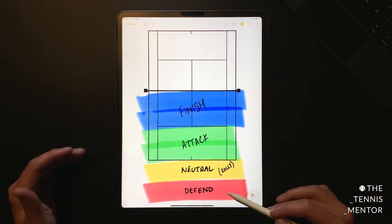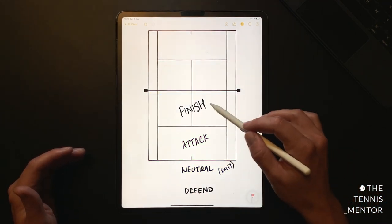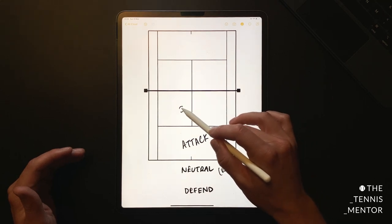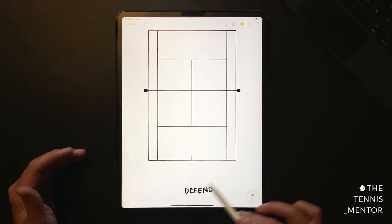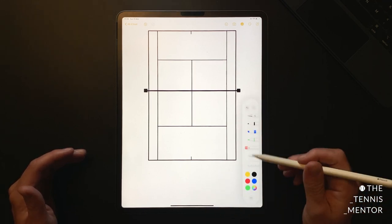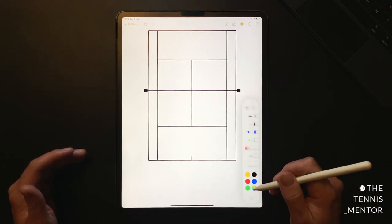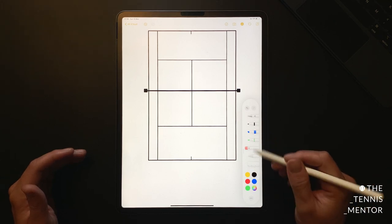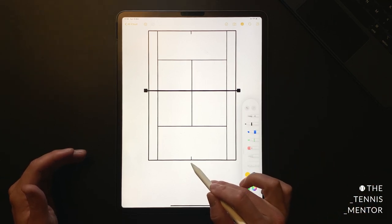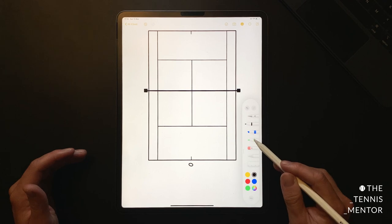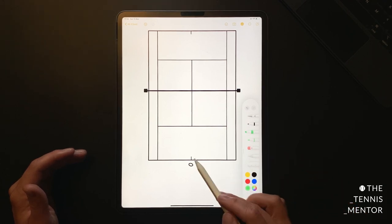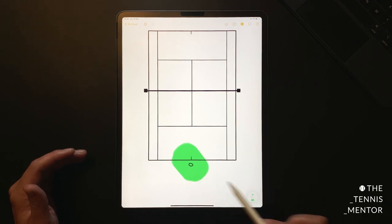Another way that you can think about these different zones is rather than looking at different zones on the court as I've laid them out here, you can actually look at them in a slightly different way. If you think of yourself in this position here in the center of the court at the baseline, your attacking zone may look a little bit more like this, something within your comfort zone.